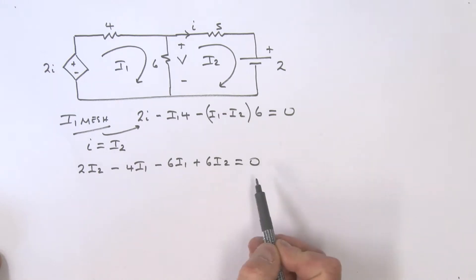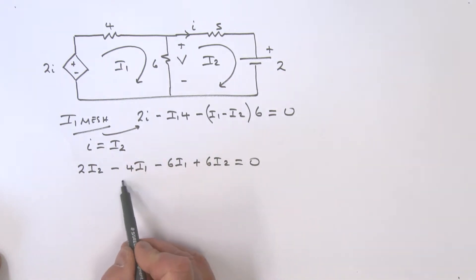Let's collect our terms together. We have 8 I2s and that is equal to, taking that to the other side, that is 10 I1. So we can say from this that if I divide both sides by 10, we have 0.8 I2 is equal to I1. So I've got I1 in terms of I2.